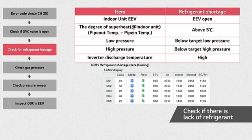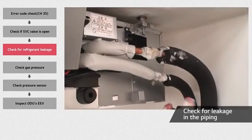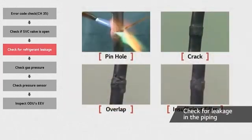Low refrigerant volume may cause excessive discharge temperature. There are two possible causes for lack of refrigerant: maybe the right amount was not charged into the system from the very beginning, or there is a leakage in the piping. Check the brazing and flare connections of the air conditioner. To make sure there are no refrigerant leaks, check for bubbles. Also, check that the piping is not deformed.